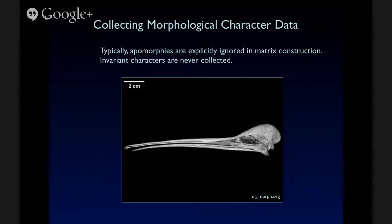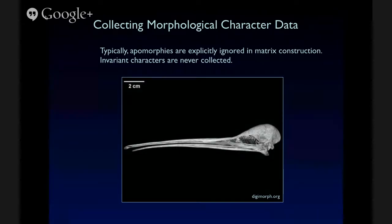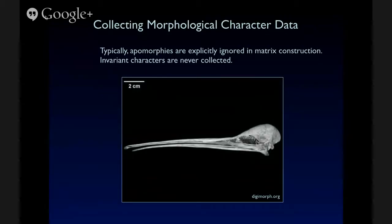And finally, just a point about collecting morphological data in general, and this can be from living taxa or fossil taxa. Typically, apomorphies are explicitly ignored in the matrix construction phase. So here we have a kiwi skull. And this is the only bird that has its nostrils at the very tip of its beak. And that's a really unique character. But it's unlikely that there's going to be a character formulated for a morphological matrix that says nostrils at end of beak, yes or no, because that character is just going to be an apomorphic and won't be useful in the context of parsimony phylogenetic analysis.